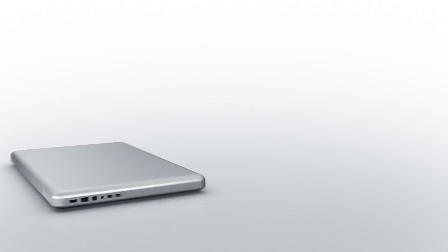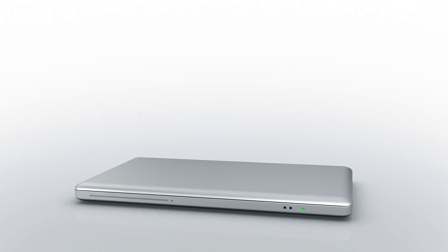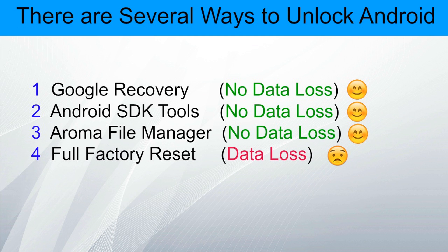So let's start. There are several ways to unlock your device without resetting it and without losing all of your data. Number 1: with Gmail account. Number 2: Android SDK tools. And number 3: with Aroma file manager. In all these 3 methods your data will be saved. And the last one is a full factory reset.